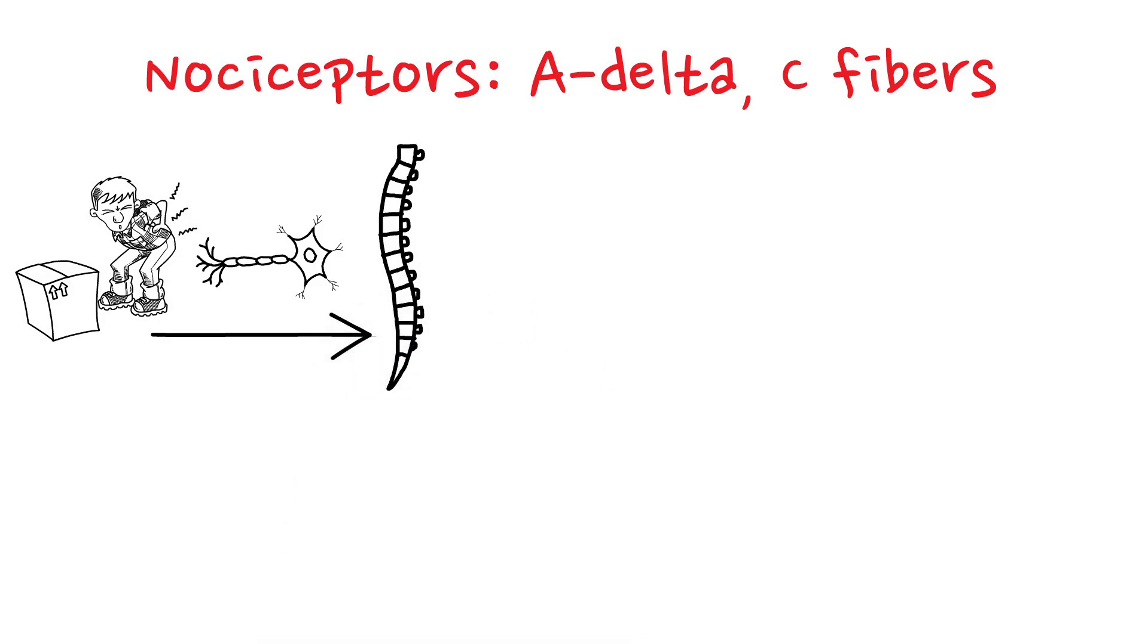These signals are carried by two main types of fibers: A-delta fibers and C fibers.